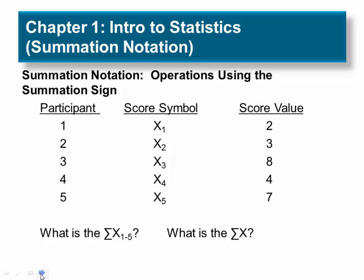What would be the sum of X3 through 4? So sum of X3 through 4. If you said 12, that's correct. How about the sum of X1 through 5? If you said 24, that is correct.